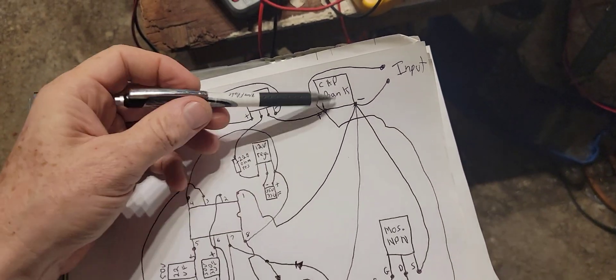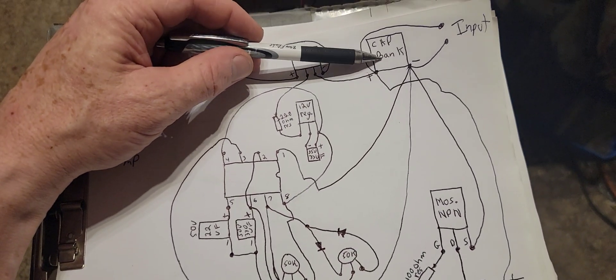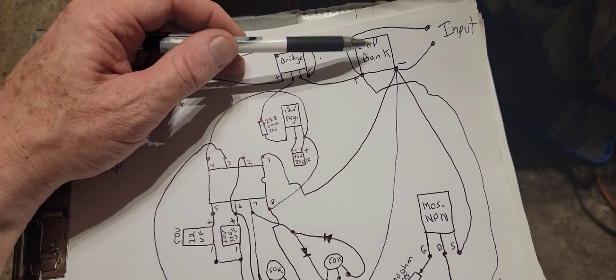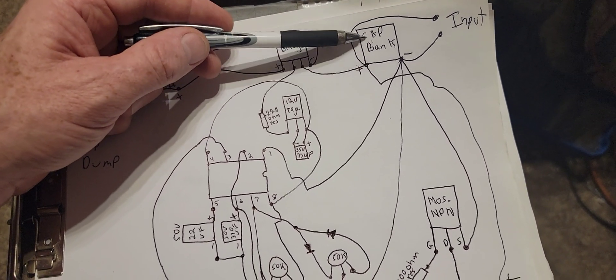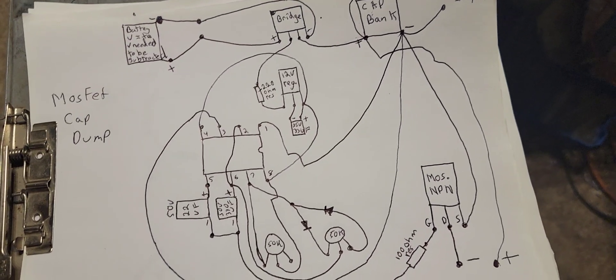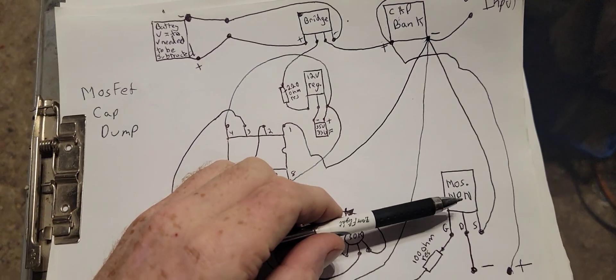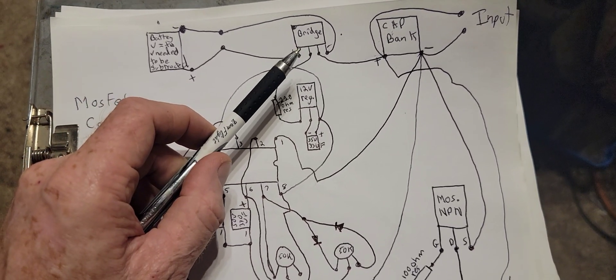So say you got it like a... say you're trying to pulse like 50 volts or 60 volts, anything, whatever you want right here, doesn't really matter. You can do it with this circuit as long as your MOSFET can handle it and the bridge rectifier can handle it.